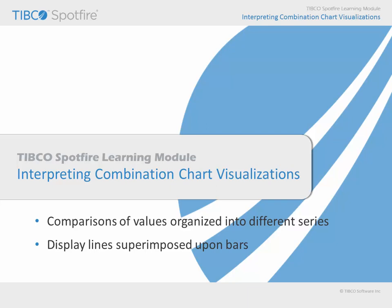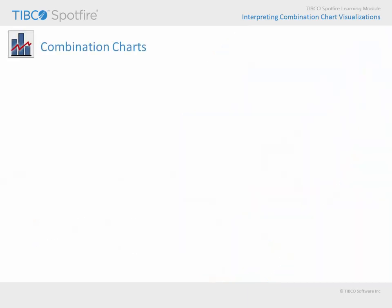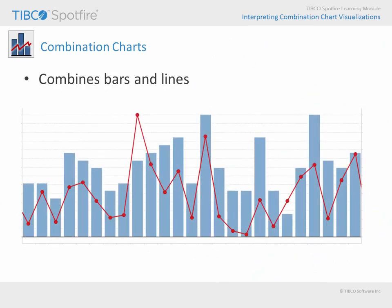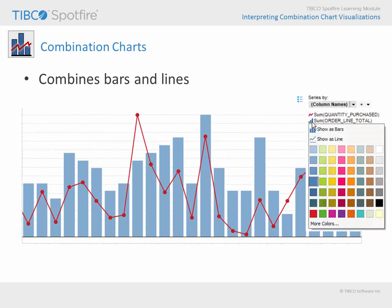In fact, the answer to the question of when do I need to use a combination chart is when you wish to examine some values in the form of bars and other values in the form of a line. Look for the Series by selector in the legend in order to select which values are displayed as lines and which are displayed as bars. You can also elect appropriately contrasting colors for each.